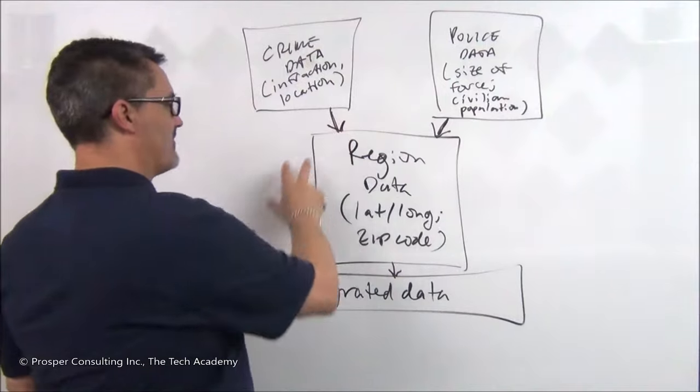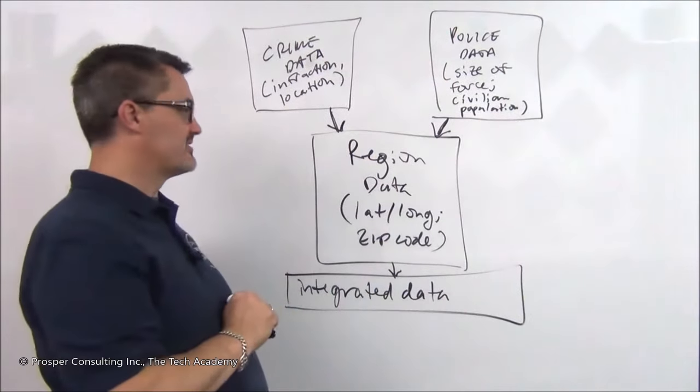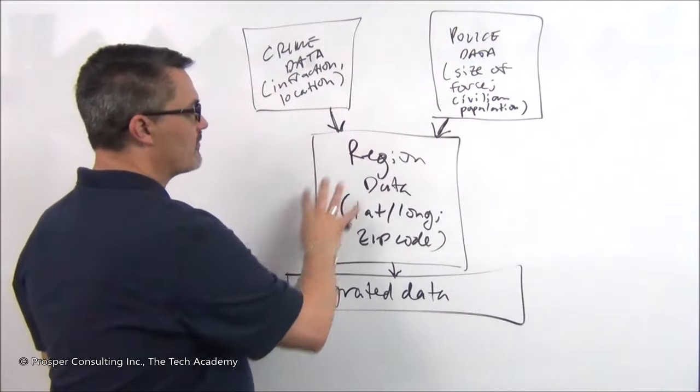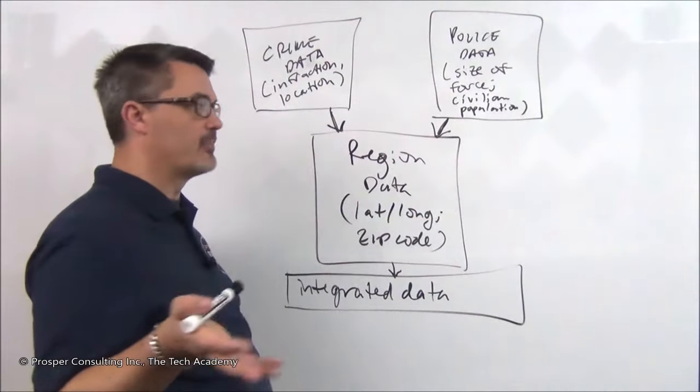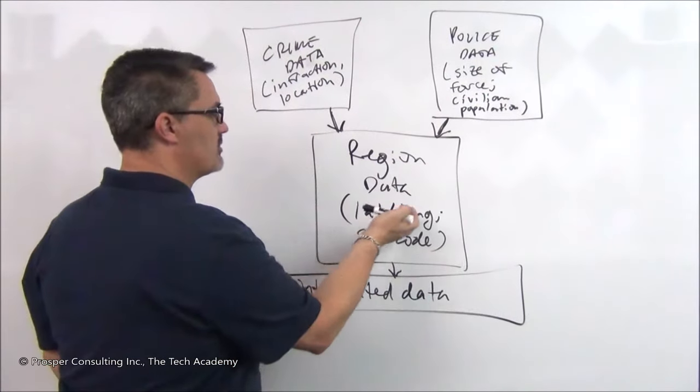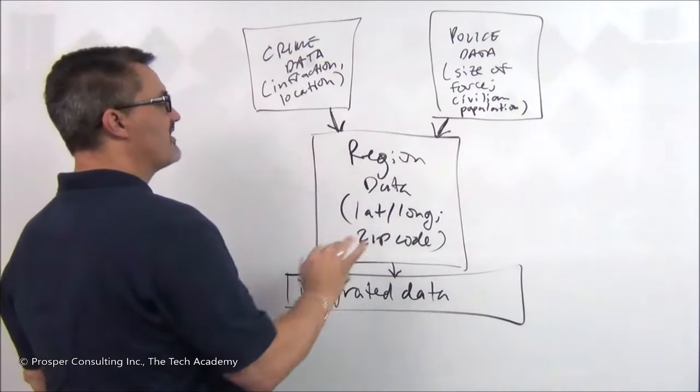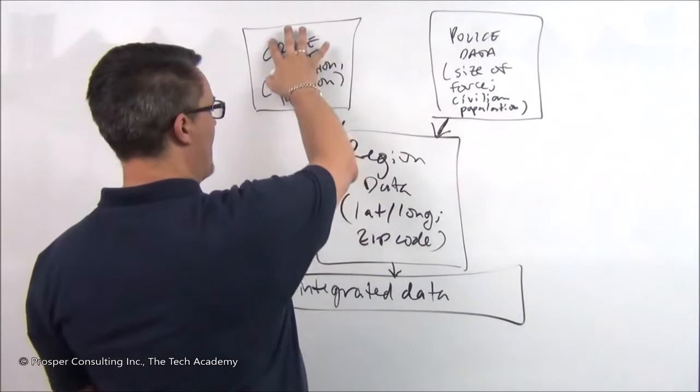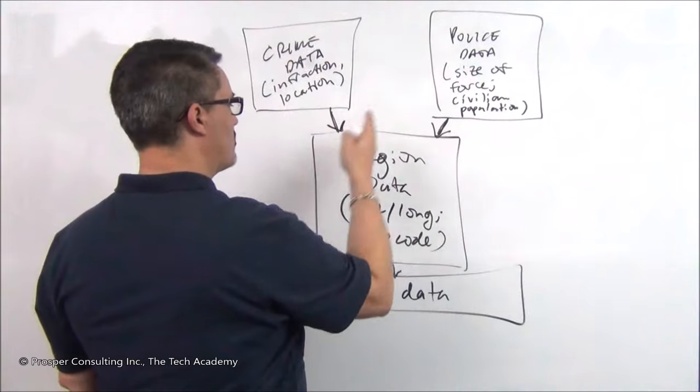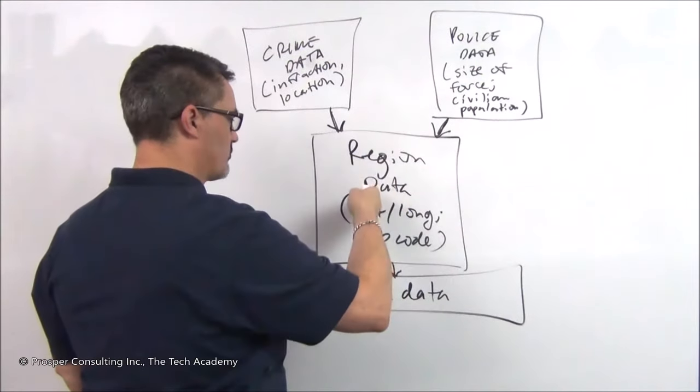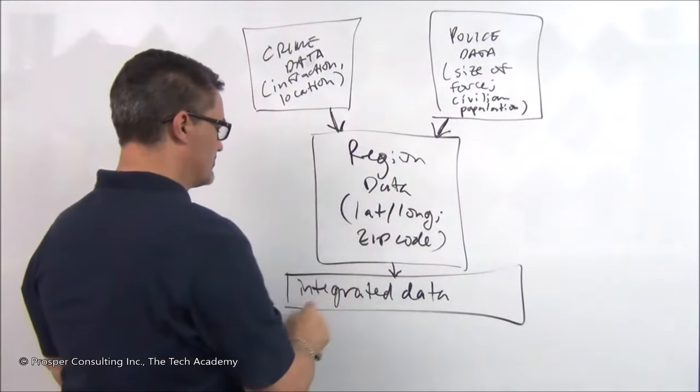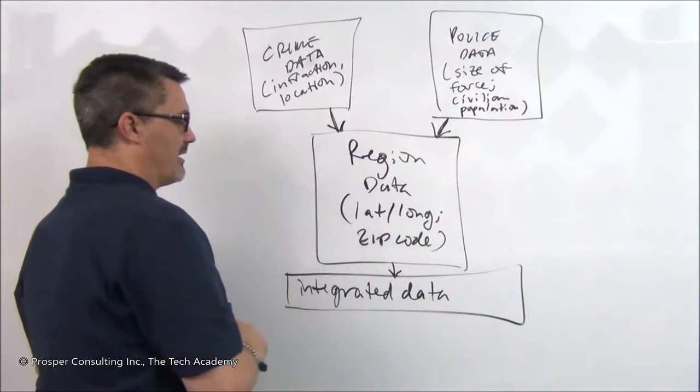And you might have a set of region data. This is just simply like, what are the different regions in an area? In our example, in a country. It could be done by latitude and longitude. It could be done by zip code. But the point is, if you have these three elements, you can have data on crime correlated to regions, data on police correlated to regions, and integrate those into one set of integrated data.